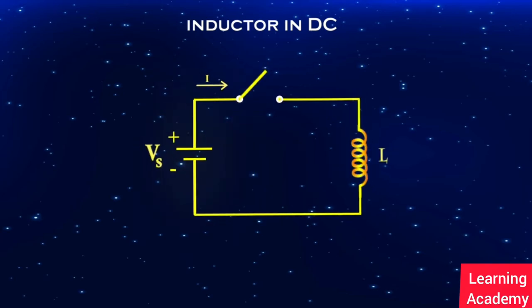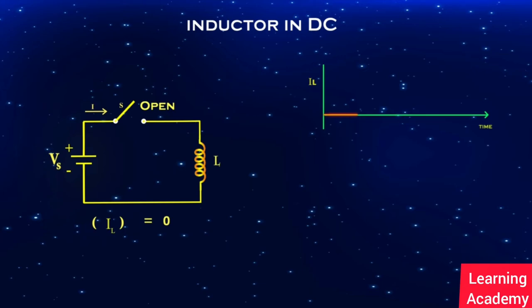Let us consider a simple circuit with a practical inductor, which is unmagnetized, connected to a battery or DC source through a switch. Until the switch is open, there will be no flow of electrons through the inductor. The magnitude of current is zero, and voltage across inductor is also zero.